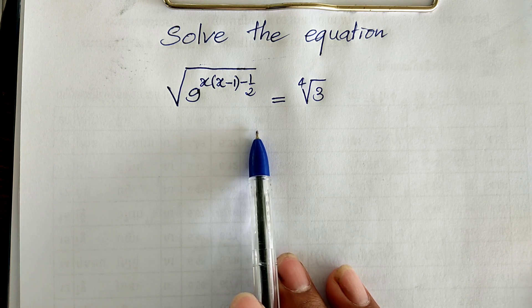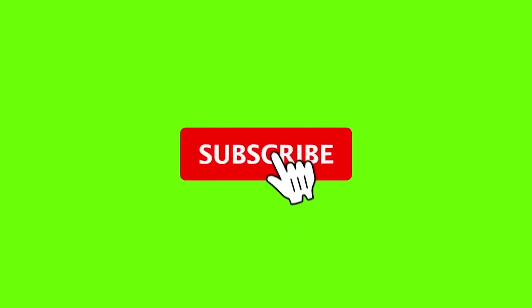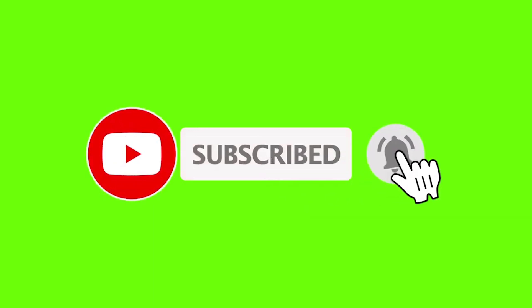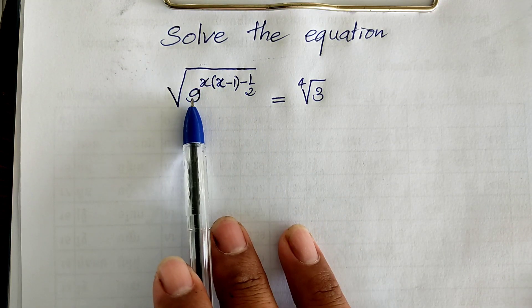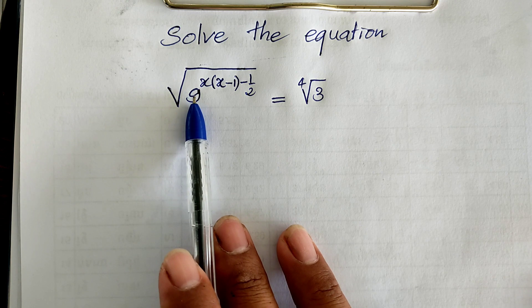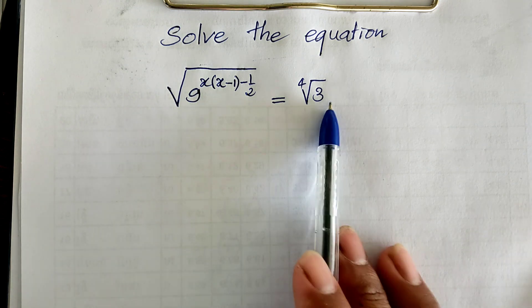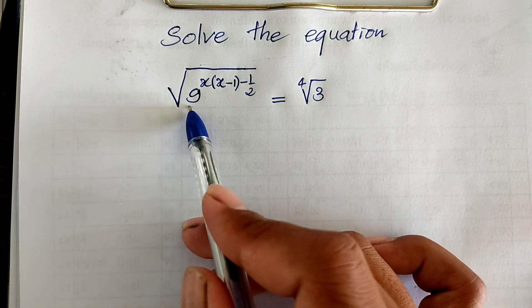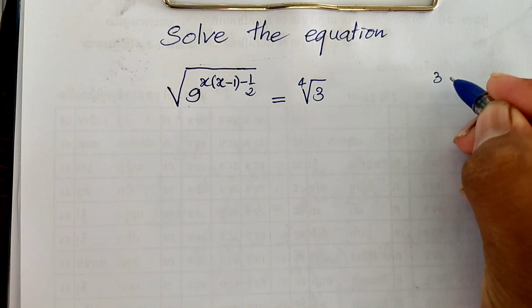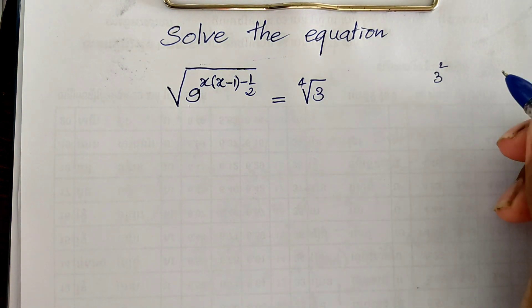Okay now, to begin, we go to the solution together. This equation has 9 as the base, and 9 equals 3 squared. So this 9 is equal to 3 squared.